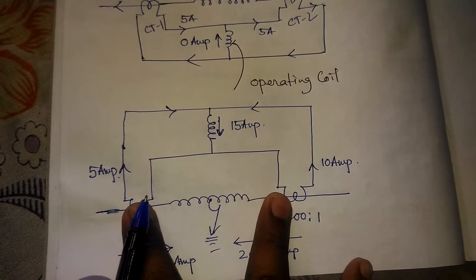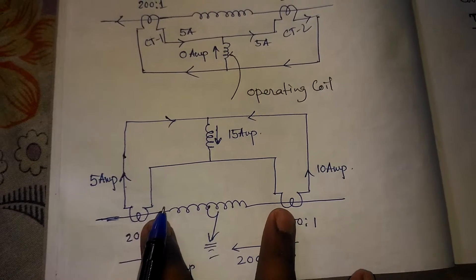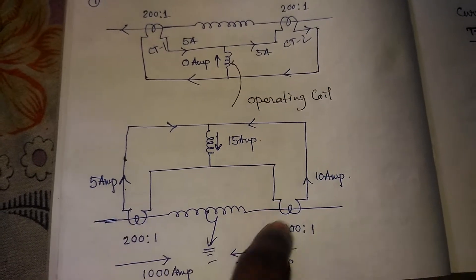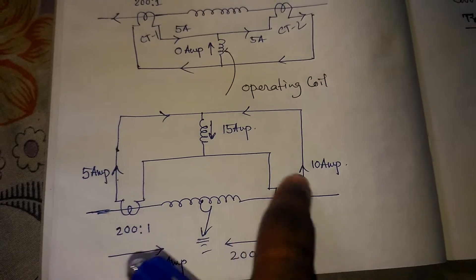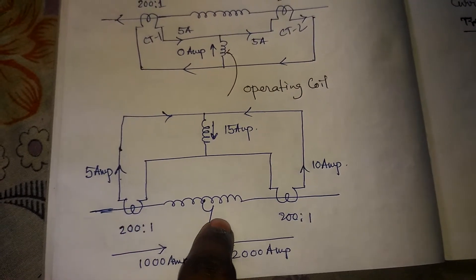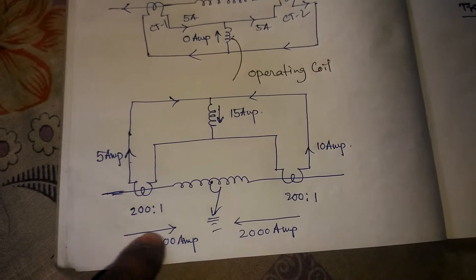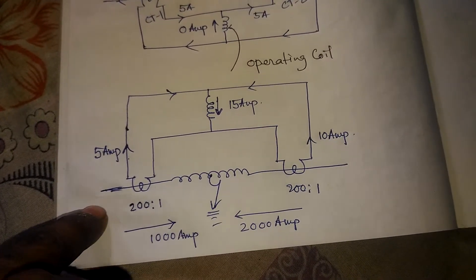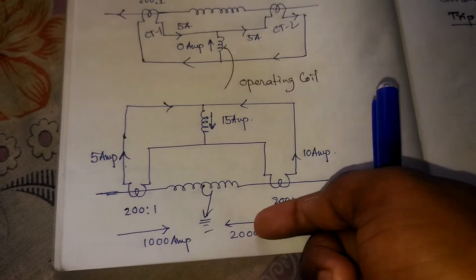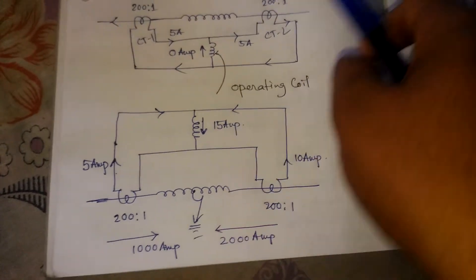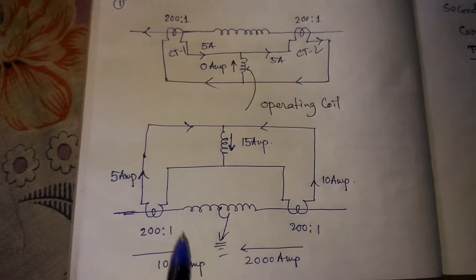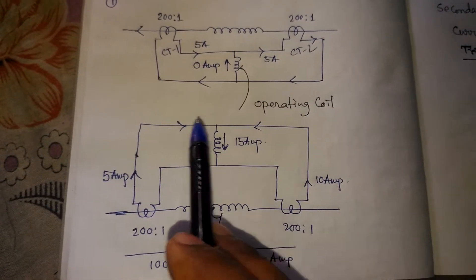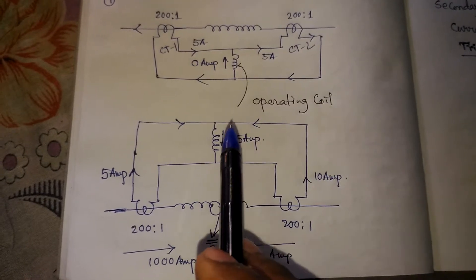If some internal fault occurs in between these two CTs — this is also called the restricted zone, or restricted zone protection — the current flows to the point of the fault. Suppose 1000 amperes fault current is flowing in one direction and 2000 amperes fault current is flowing from the other direction. The secondary current from CT1 will be 5 amperes and from CT2 will be 10 amperes. So the two currents are added: 15 amperes is flowing to the relay coil.